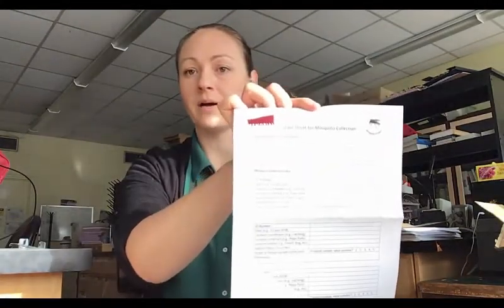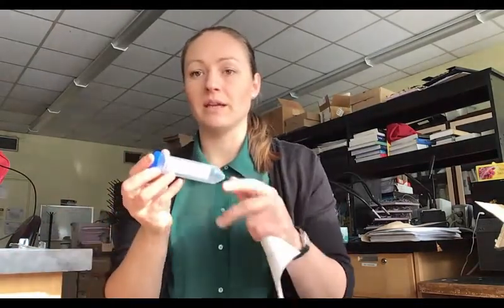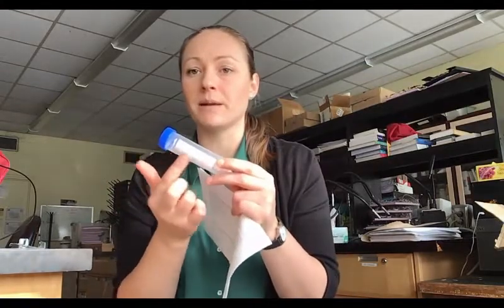That package will have a few different things in it. One is information on the project with contact information and instructions on the other side. The other sheet is your data sheet where you'll put all the information about where you collected, what the habitat was, that kind of stuff. This will correspond to the information you write on the collection tube label here.